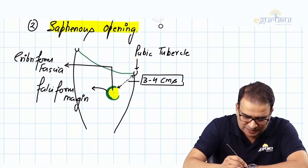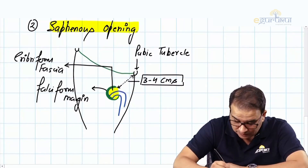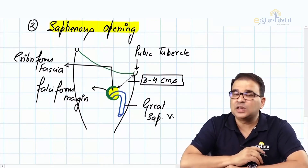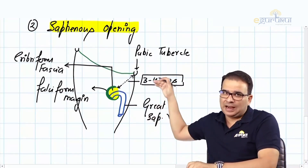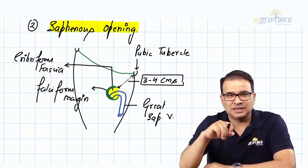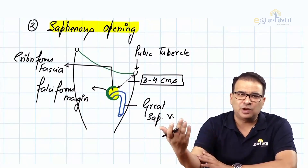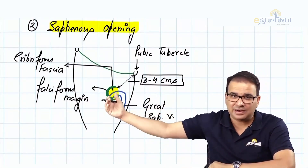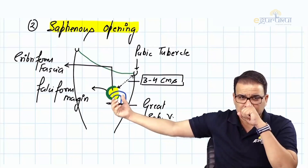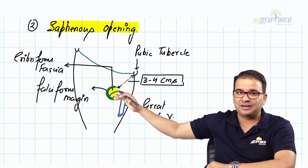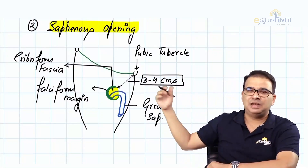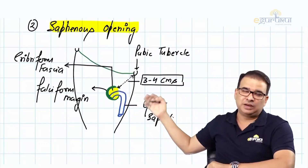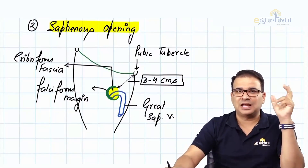The saphenous opening allows passage to the great saphenous vein and its tributaries. Lymphatics draining from superficial to the deeper group of lymph nodes can also pass through it. The great saphenous vein goes through the saphenous opening and drains into the femoral vein. The lateral margin is superficial and falciform; the medial margin is deep — deep to the great saphenous vein itself.